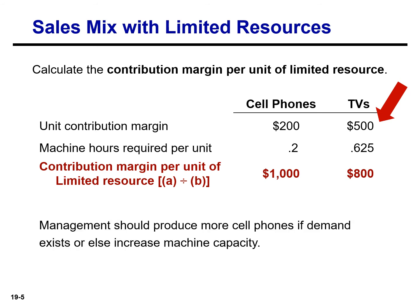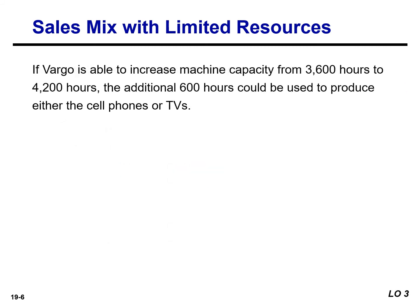This would suggest that given sufficient demand for cell phones, Vargo should shift the sales mix to produce more cell phones or increase machine capacity. If Vargo is able to increase machine capacity from 3,600 hours to 4,200 hours, the additional 600 hours could be used to produce either the cell phones or TVs.